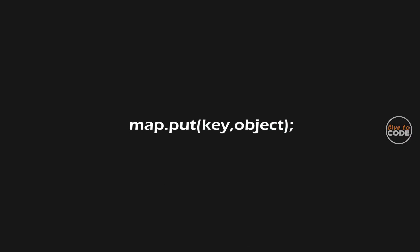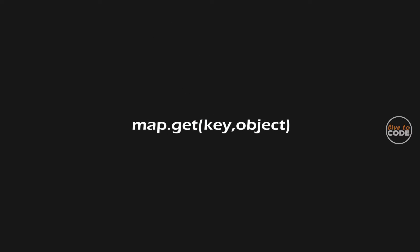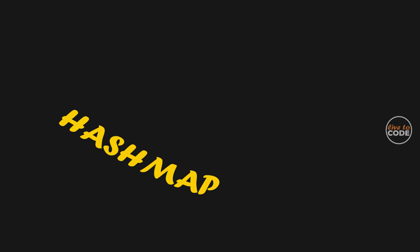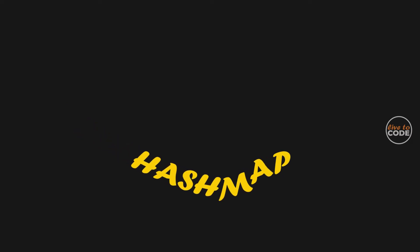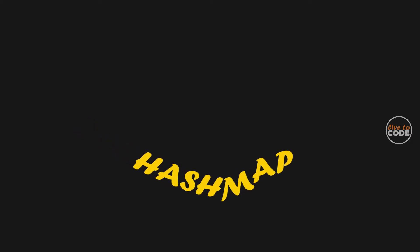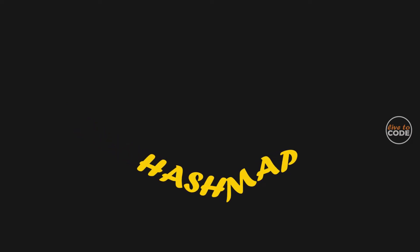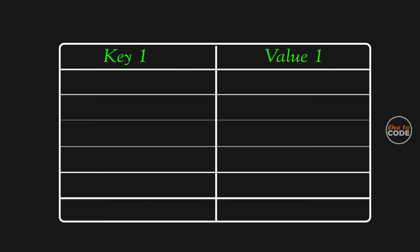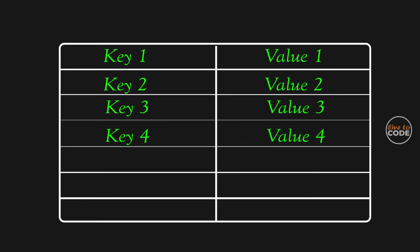What happens internally when we call the put function in HashMap, and when we call the get function of HashMap? Before diving into the topic, we should know about HashMap. HashMap in Java is a key-value pair data structure.